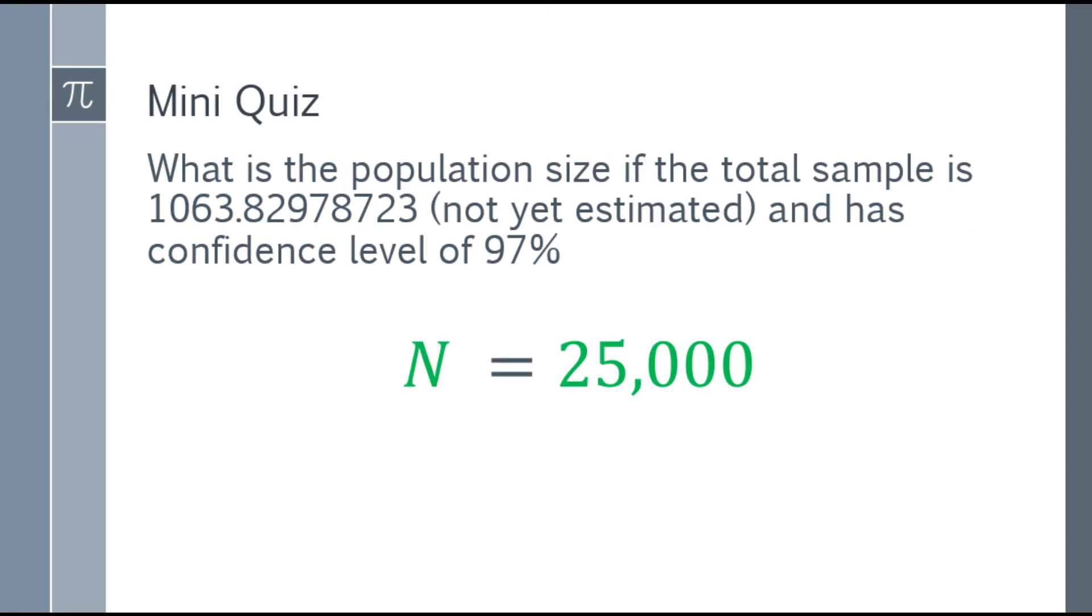Time's up, and the answer is 25,000 for the population size. How did we get that? We're finding the population size, and we're given sample size and confidence level. Again, precision level and confidence level are the same. So we need to find the margin of error.